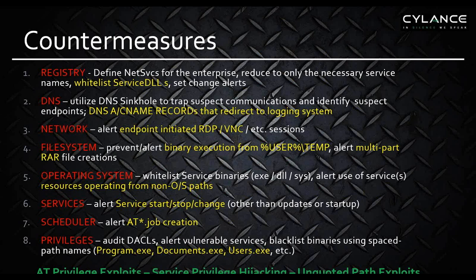When we look at detect and monitoring, we look at these eight levels: registry artifacts, DNS use, network settings and use, file system artifacts and methods, operating system configuration, services history, scheduler settings and privileges. I've highlighted in yellow some things you can do to get beyond just monitor and detect and move toward the prevent phase — things that will help you address the exploits discussed: service privilege hijacking, AT privilege exploits, or unquoted path exploits. They'll also help you get beyond dropper/downloader methods or persistent RAT capabilities.